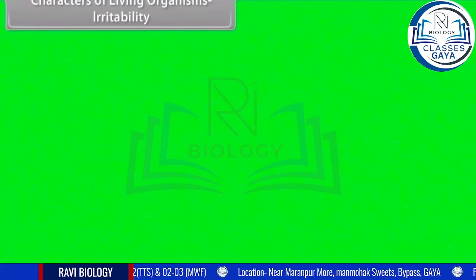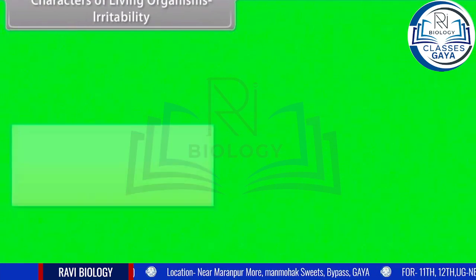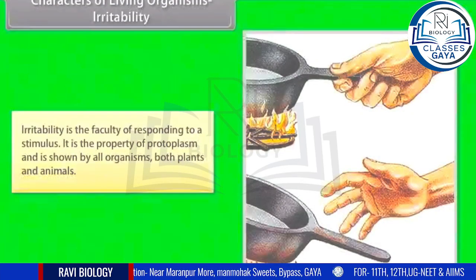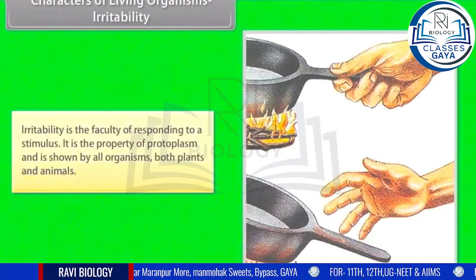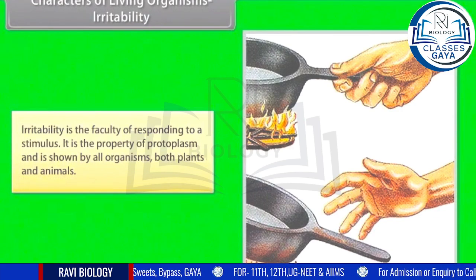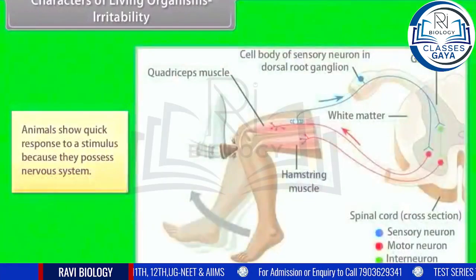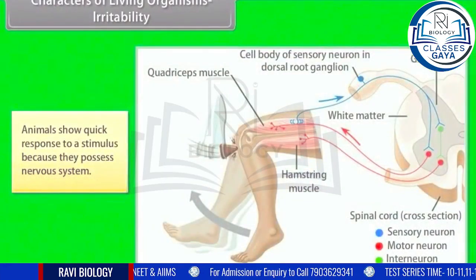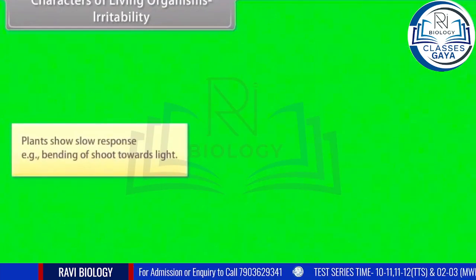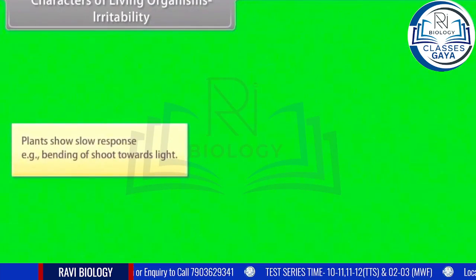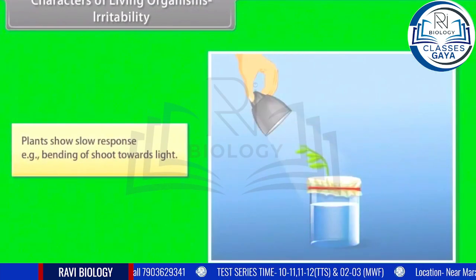Characters of living organisms — Irritability: irritability is the faculty of responding to a stimulus. It is a property of protoplasm and is shown by all organisms, both plants and animals. Animals show a quick response to a stimulus because they possess a nervous system, while plants show a slow response. For example, the bending of a shoot towards light.